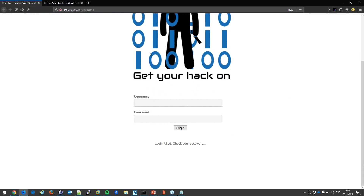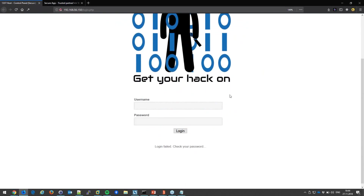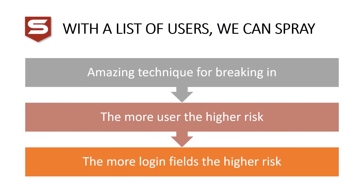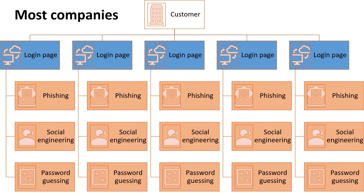From the outside, the organization looks robust and hard to break in. But from the inside — where we have a profile, password change, system diagnostics — there are vulnerabilities all over. Most companies have a plethora of login forms everywhere: VPNs, Azure, remote desktops, Citrix, all different login pages.